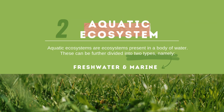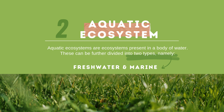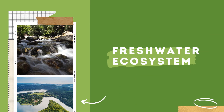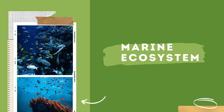Next, the second type is the aquatic ecosystem. Aquatic ecosystems are the ecosystems present in a body of water. This can be further divided into two types, namely freshwater and marine. The freshwater ecosystem is an aquatic ecosystem that includes lakes, ponds, rivers, streams, and wetlands. These have no salt content, in contrast with the marine ecosystem.